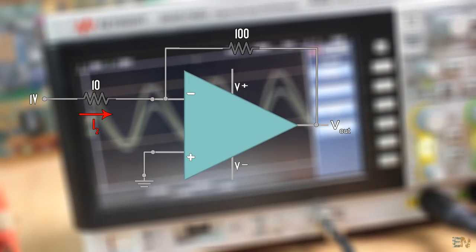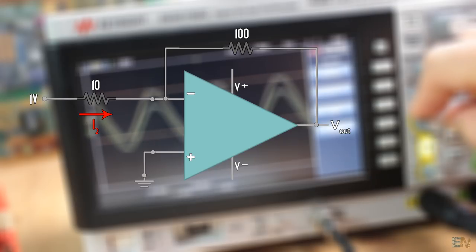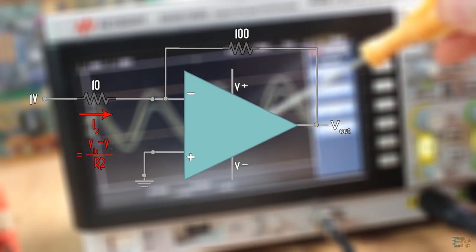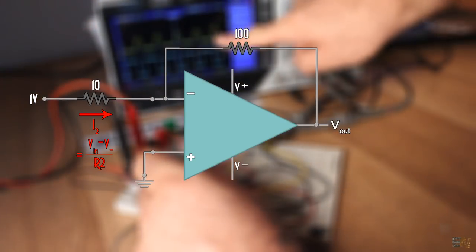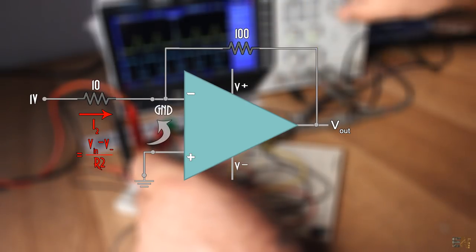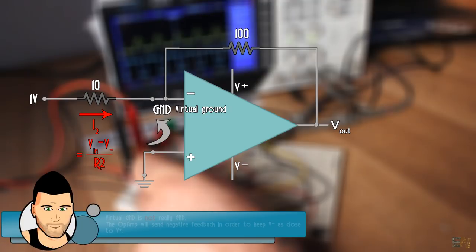A current will flow to R2. That current value is the input minus the voltage at the negative input point divided by R2. But the voltage at the negative point must be the same as the one at the positive input, in this case ground. We call this virtual ground, since we don't really have a ground at that negative pin.